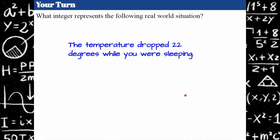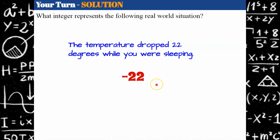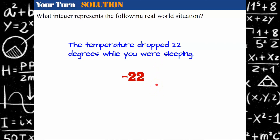The temperature dropped 22 degrees while you were sleeping. What integer would you use here? Go ahead and pause. Welcome back. I hope you remembered the negative sign because the temperature dropped — it went down. So we want to note going down on our thermometer.